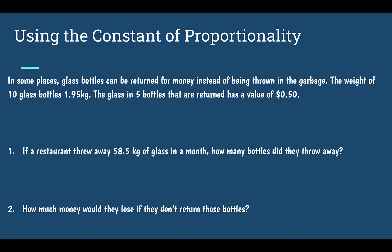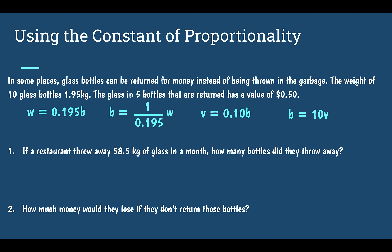Now that we have our four equations, let's answer some problems. If a restaurant threw away 58.5 kilograms of glass in a month, how many bottles did it throw away?